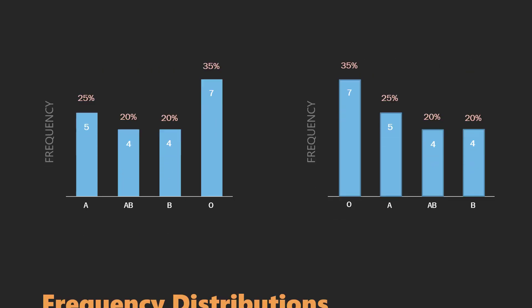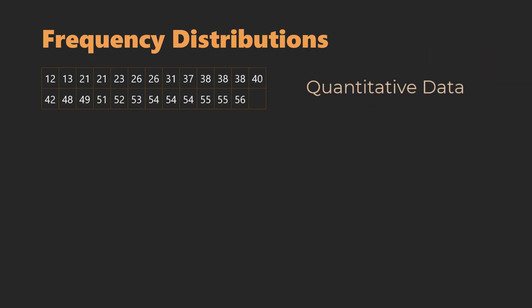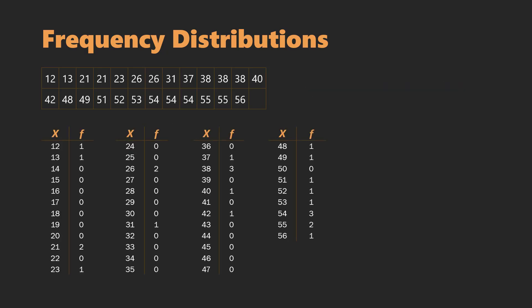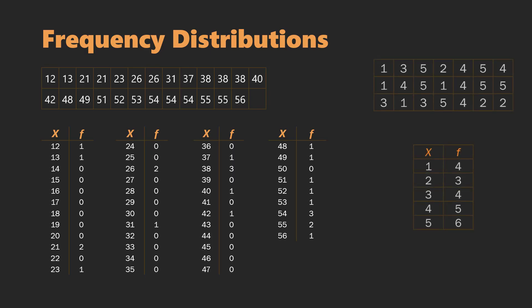Consider this dataset consisting of the ages of 25 patients at a hospital. We can attempt constructing a frequency distribution by listing all values from 12 all the way to 56, but that will be even less meaningful because the range of the data is wide. This approach could be useful when there are only a few different data points with a lot of repetition.